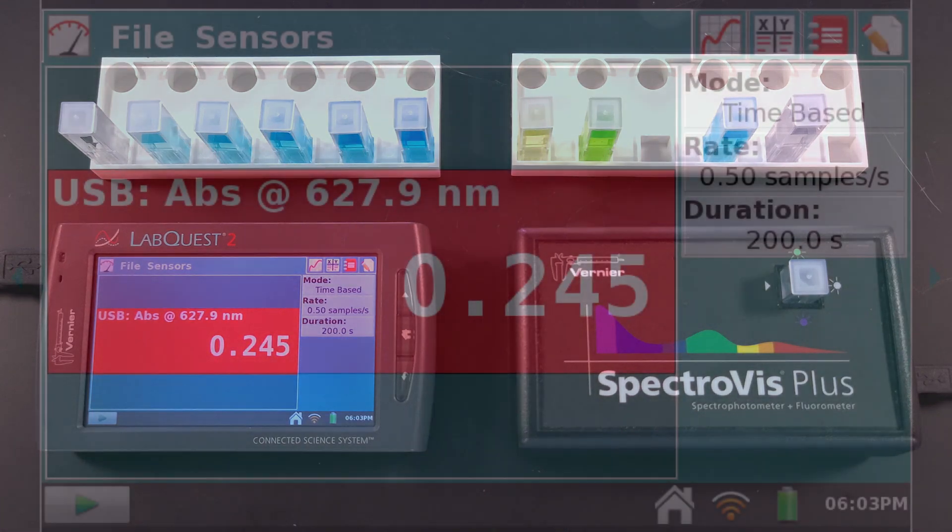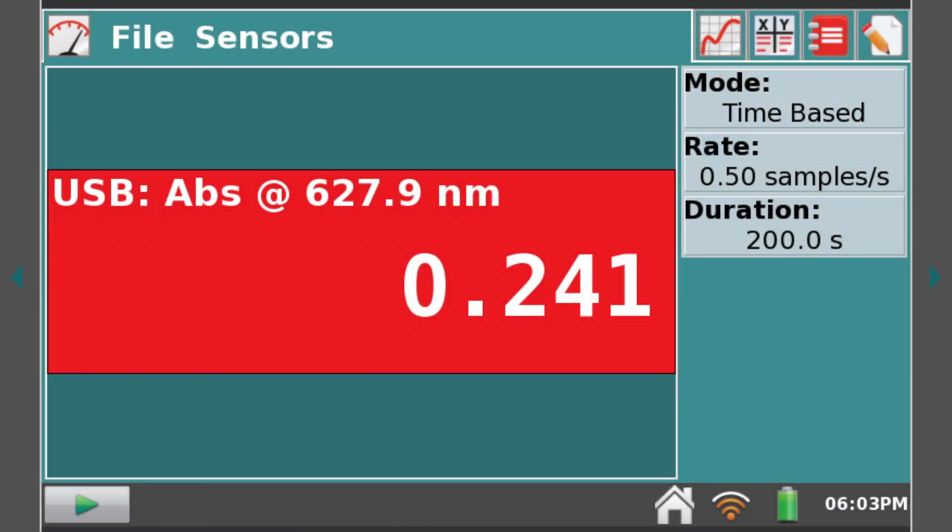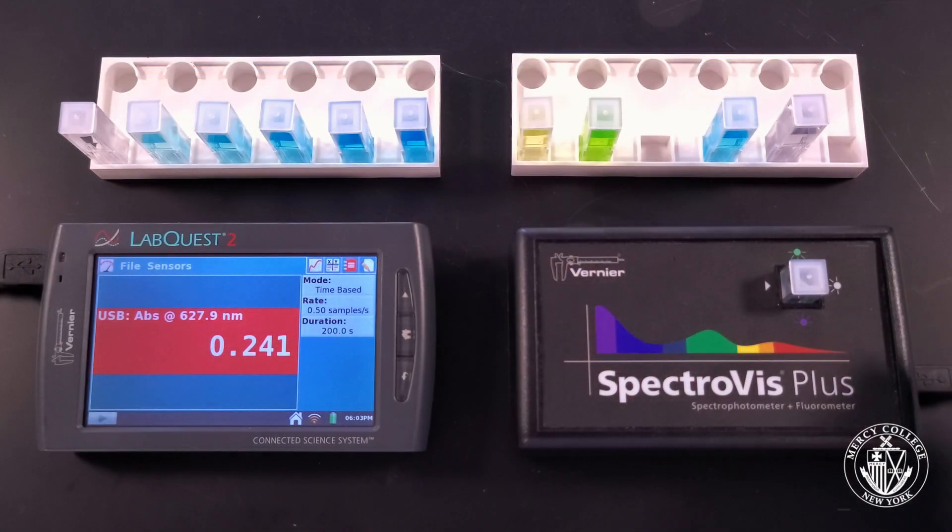Our third sample of frost arctic blitz appears to have an absorbance of 0.241.